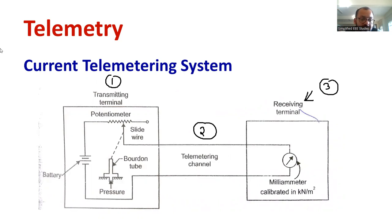When it comes to the transmitting terminal, we can see a DC supply, a battery. Later we can see a potentiometer here. There is a slide wire or a slider which is connected with the bourdon tube. As the pressure changes, position of the slider wire is also getting changed.